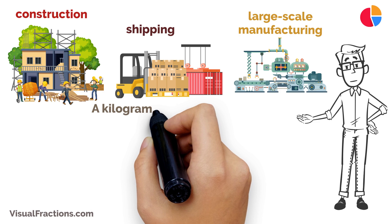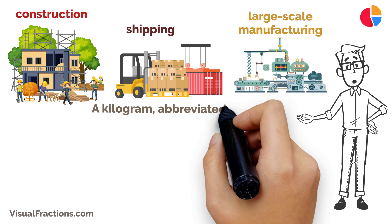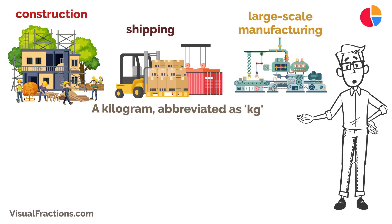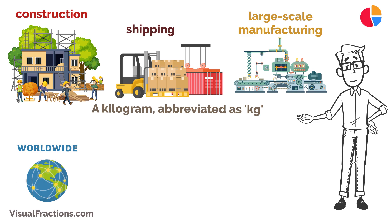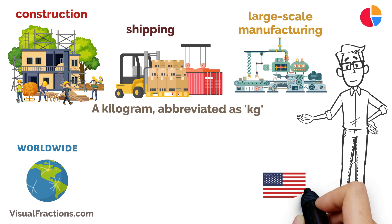A kilogram, abbreviated as kg, is a standard unit of mass used worldwide. In contrast, a ton, which can have different values depending on the country, is typically used for measuring much heavier weights.